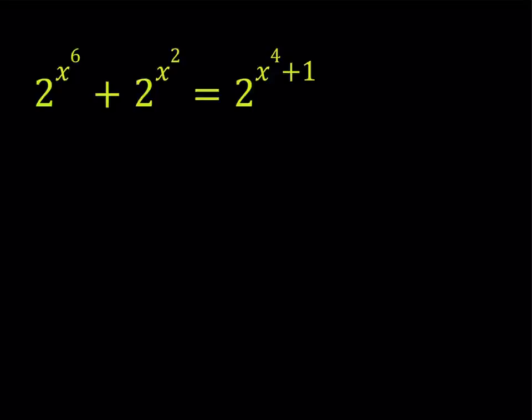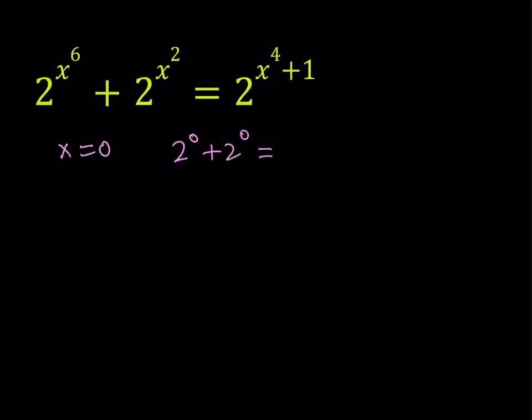Since this equation is not standard, we can't really use the general rules here, but we can find some solutions by inspection or trial and error. For example, if you replace x with 0, you'll notice that it works because 2 to the power of 0 plus 2 to the power of 0 is equal to 1 plus 1, which is 2, and that is equal to 2 to the power of 0 plus 1. So 0 works.